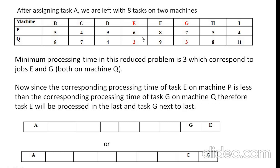From these eight tasks, again find the minimum processing time. The minimum processing time is 3, which corresponds to jobs E and G. Both jobs are on the second machine, so they are arranged last. There are two possibilities to arrange these two jobs. Since the corresponding processing time of task E on machine B is less than that of task G, the order is: G before E at the end of the sequence. These are the two possible arrangements and we can select either.